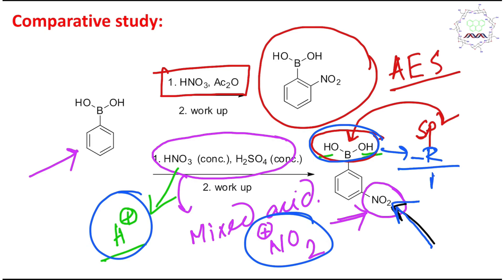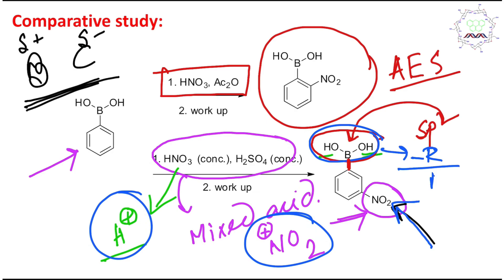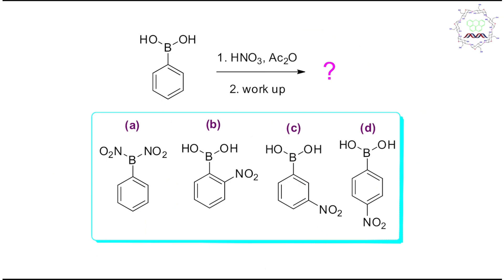Regarding the nature of the carbon-boron bond: boron is relatively less electronegative than carbon in the periodic table — boron comes before carbon, so boron is more electropositive. Therefore, carbon is expected to be delta-negative and boron is delta-positive. This is an important aspect of boron chemistry, so please remember this concept.